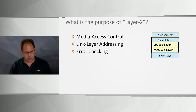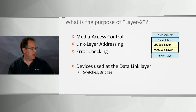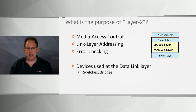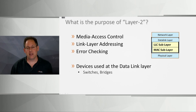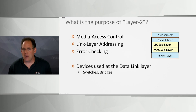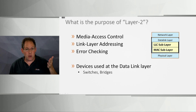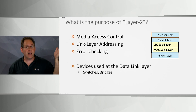Devices commonly associated with the data link layer are switches and bridges, but really anything with a NIC card operates at the data link layer. Your laptop, a router, a Wi-Fi access point — all operate at the data link layer. If you're not touching the data link layer, you have no connectivity to the physical layer, and without that you're not networking.